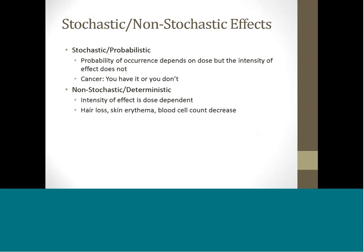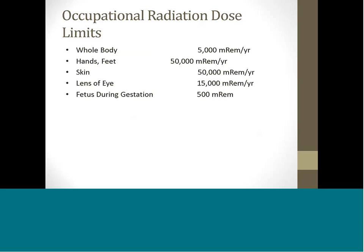There are two very distinct radiation-induced adverse effects on biological systems: stochastic or probabilistic, and non-stochastic or deterministic. Stochastic effects are those for which the occurrence of the effect, but not its intensity, depends on the dose. The stochastic effect of primary concern is cancer. Such effects occur after long latent periods from several to 20 or more years following the exposure. Occupational radiation dose limits, as per 10 CFR Part 20 and 17 CCR, are listed here.